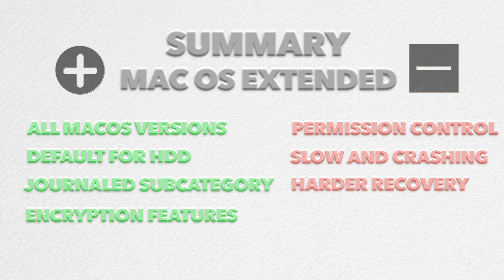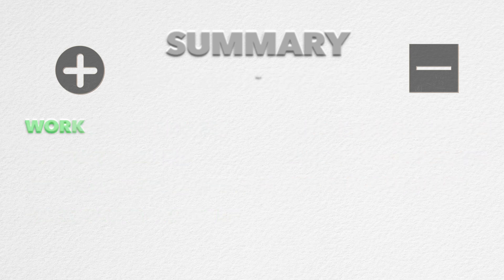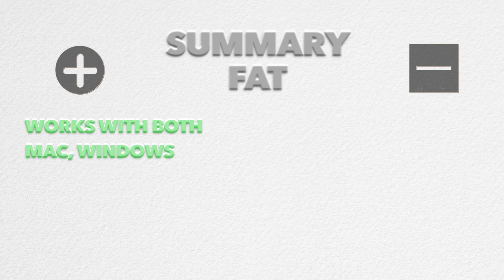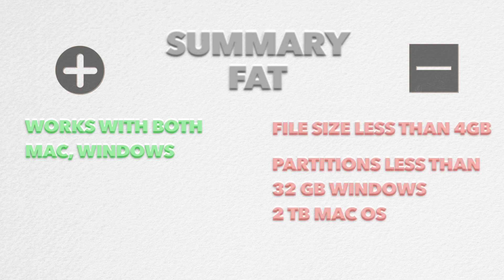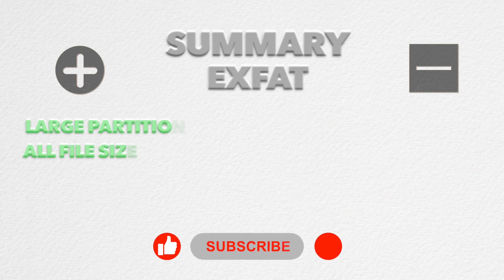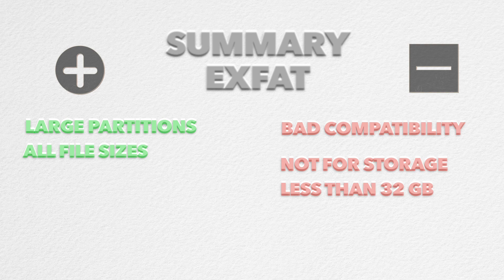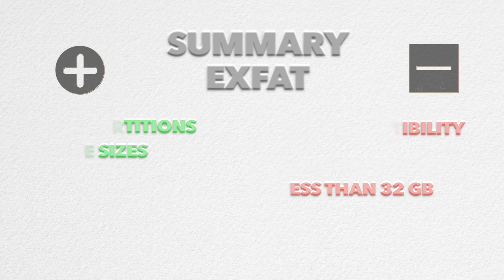Now we can jump to the cross-platform category, which is compatible with Windows. The first and older option is FAT, which works universally with all versions of Mac and Windows. But as already mentioned, the biggest disadvantage is that it can't work with files larger than 4GB, and it doesn't support large drive partitions. That is the biggest advantage of exFAT, which supports the largest partitions and all file sizes. However, it's a newer format, so there may be some compatibility issues with older operating systems, and it's not as good an option for drives smaller than 32GB since it can't maximize space utilization.